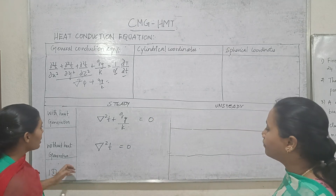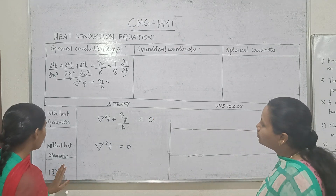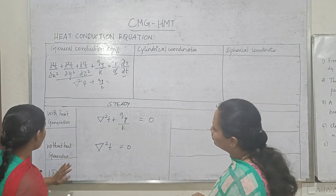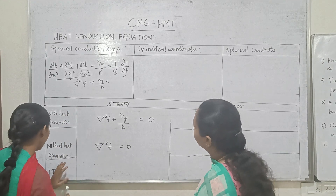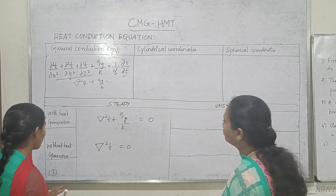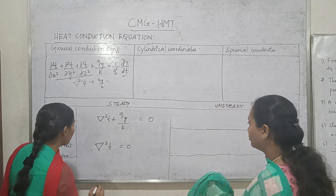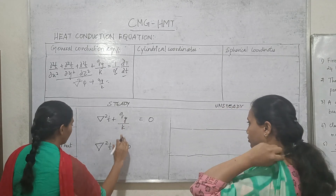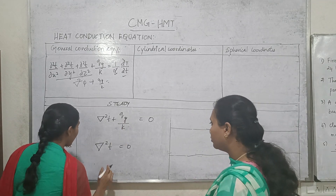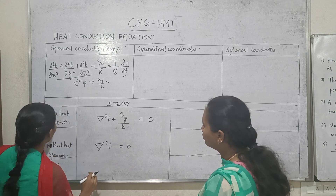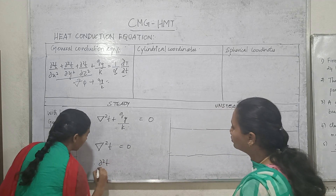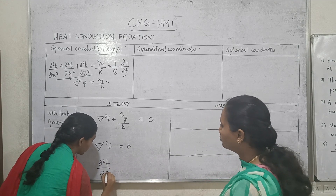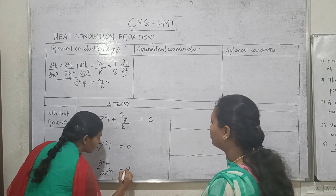Now, with one-dimensional equation with heat generation and without heat generation. Without heat generation in one dimension, we look at the x direction: ∂²T/∂x² = 0.